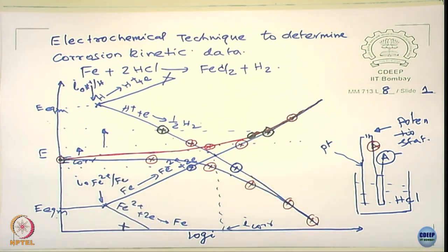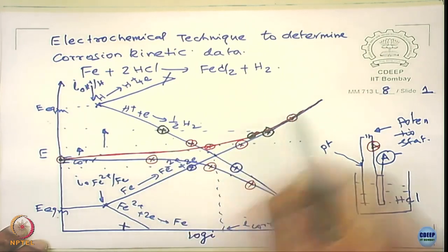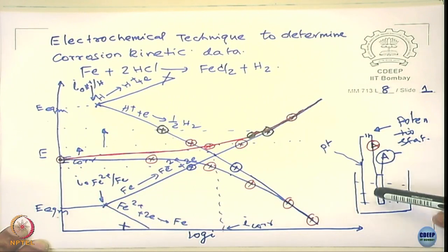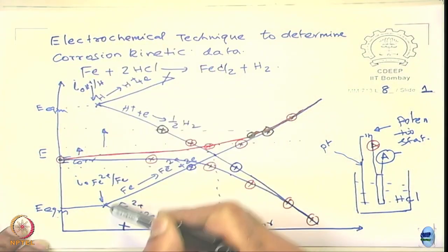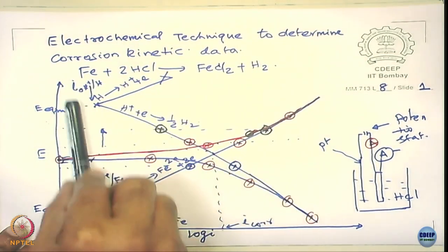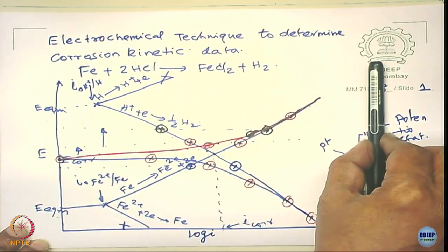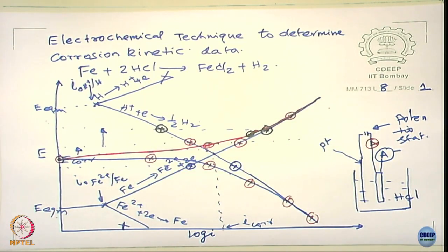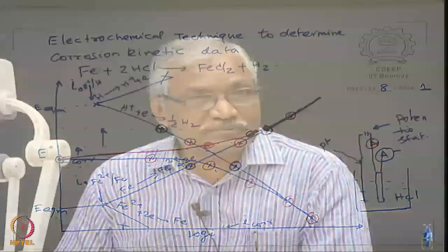It is possible for us to determine all the electrochemical parameters using the so-called polarization diagram. This is an important thing and you might have done or will soon do this experiment. In this experiment you will get only these polarization lines — you are not going to get the individual equilibrium lines directly. The moment you immerse steel in hydrochloric acid, you no longer have equilibrium. You will only get this part of it and you extrapolate to get the electrochemical parameters.